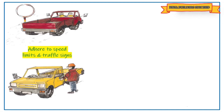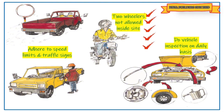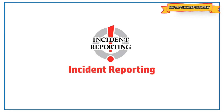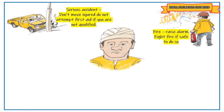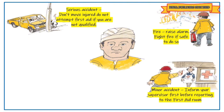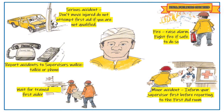Site traffic rules: adhere to speed limits and traffic signs. Two-wheelers are not allowed inside the site. Conduct a vehicle inspection on a daily basis. Incident reporting: in case of a serious incident, do not move the injured person. Do not attempt first aid if you are unqualified. In case of fire, raise the alarm and fight the fire only if safe to do so. For minor incidents, inform your supervisor first before calling for first aid. Report accidents to your supervisor via walkie-talkie or phone.